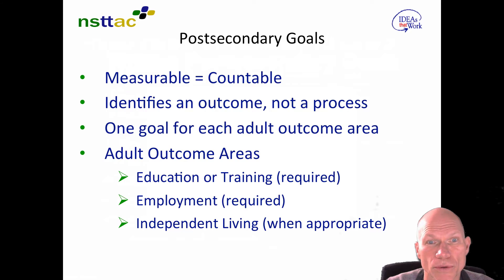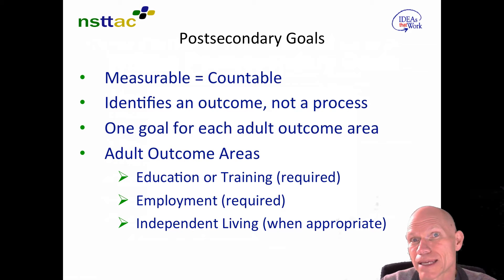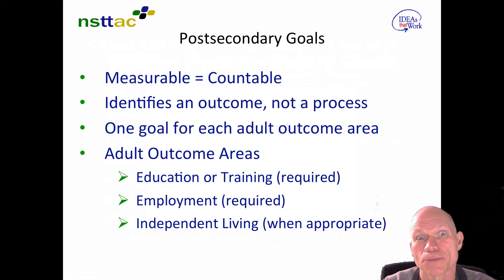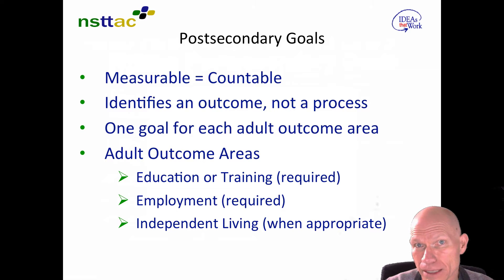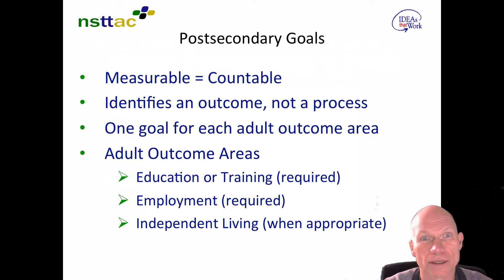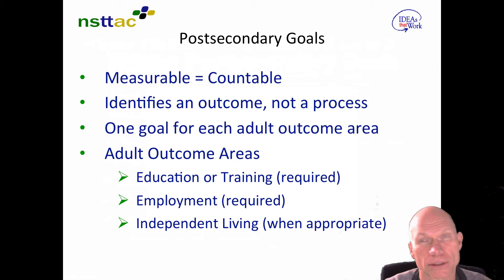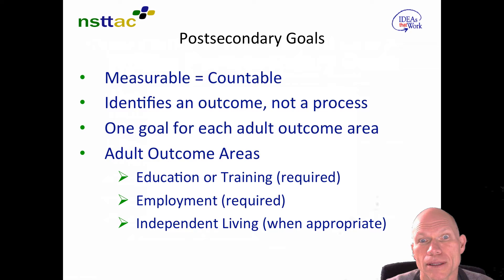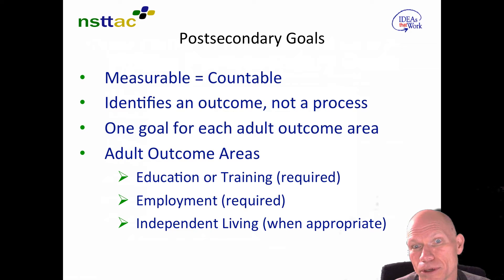Just like any IEP goal, you need to make post-secondary goals measurable. It has to be about what the student will actually do, not what they want or think. It should identify an outcome, not a process — so they will attend school, they will obtain a job, they will ride the bus independently. There needs to be at least one goal for each adult outcome area.